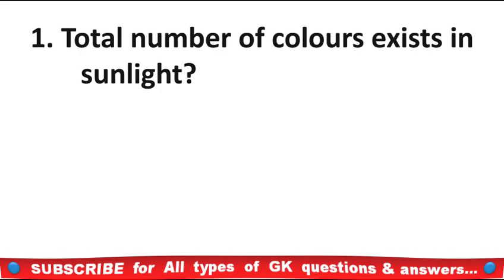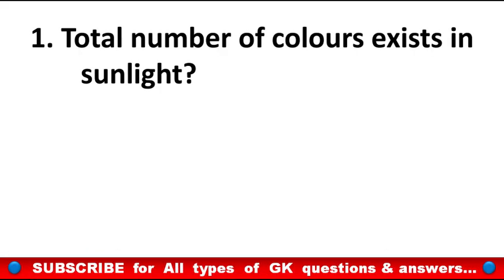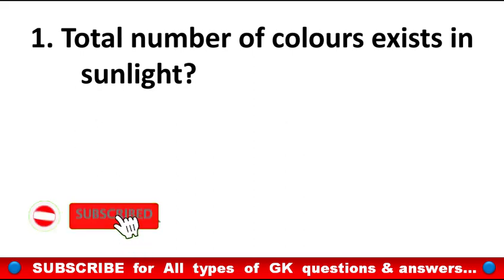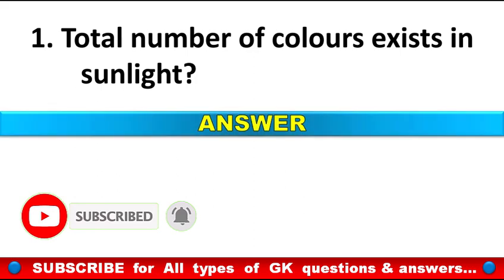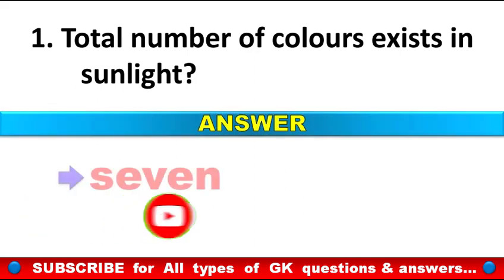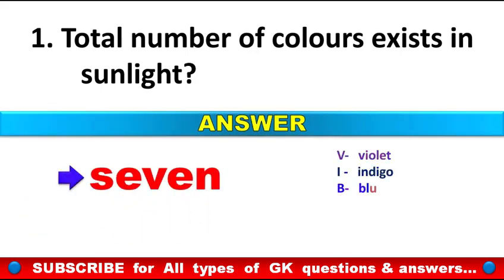1st question: Total number of colors exist in sunlight? Answer: 7. That is violet, indigo, blue, green, yellow, orange and red. In short, it is VIBGYOR.